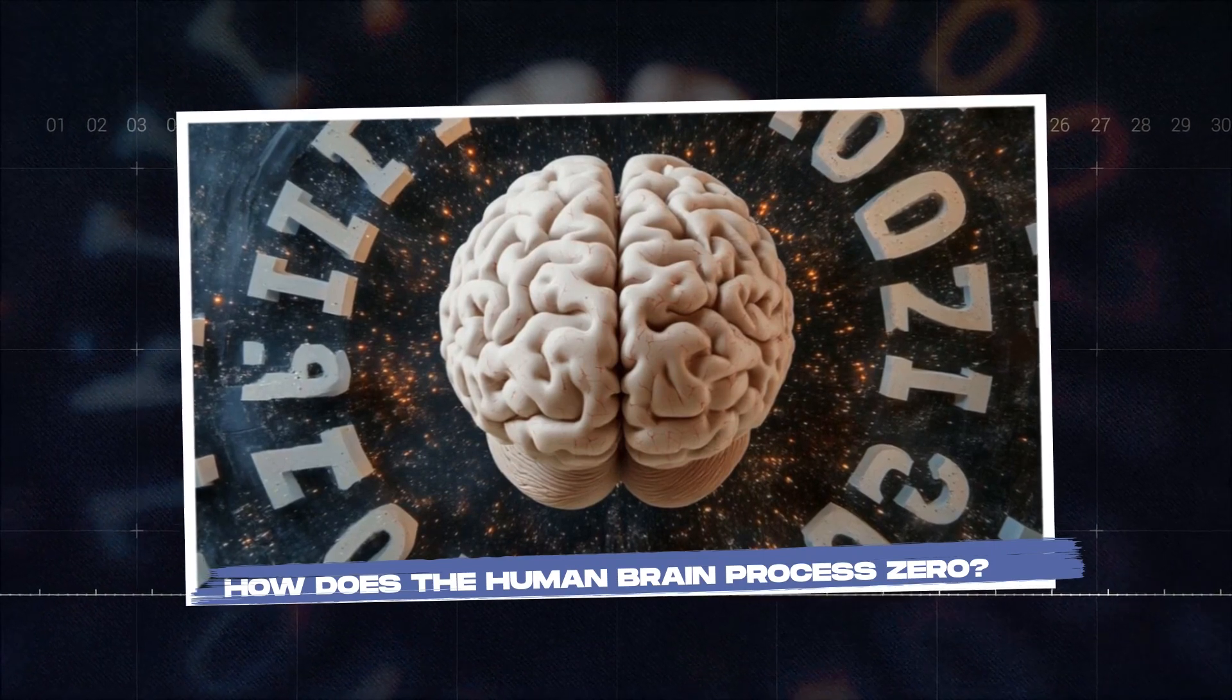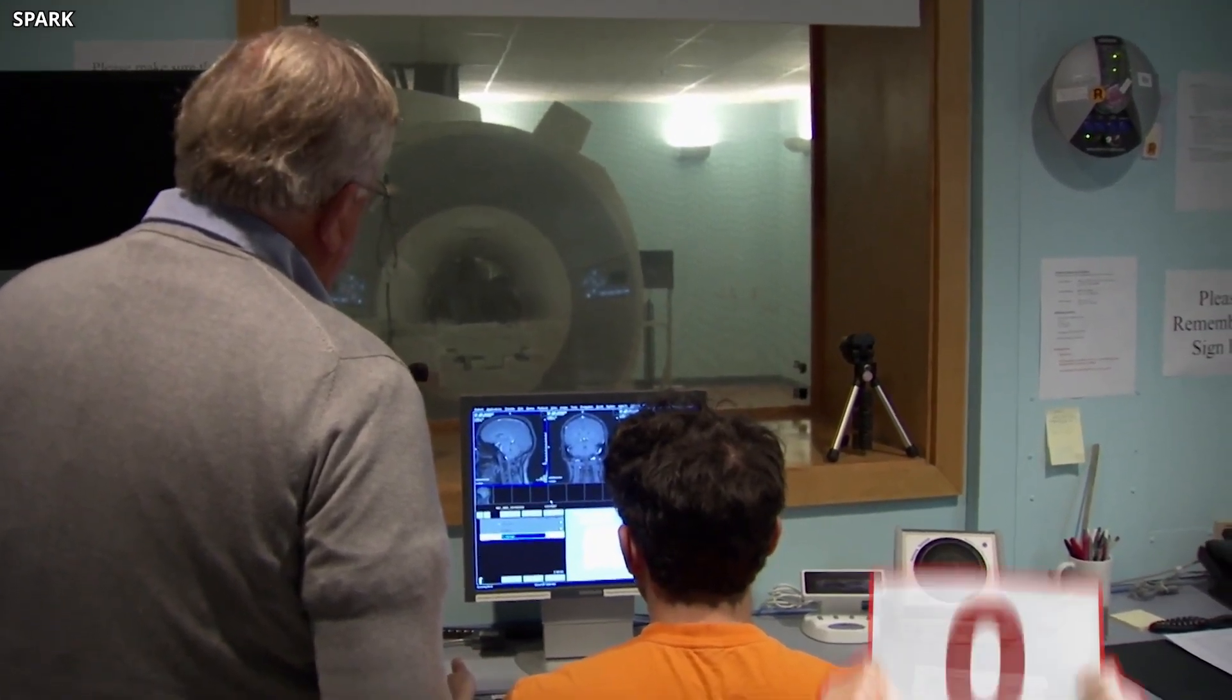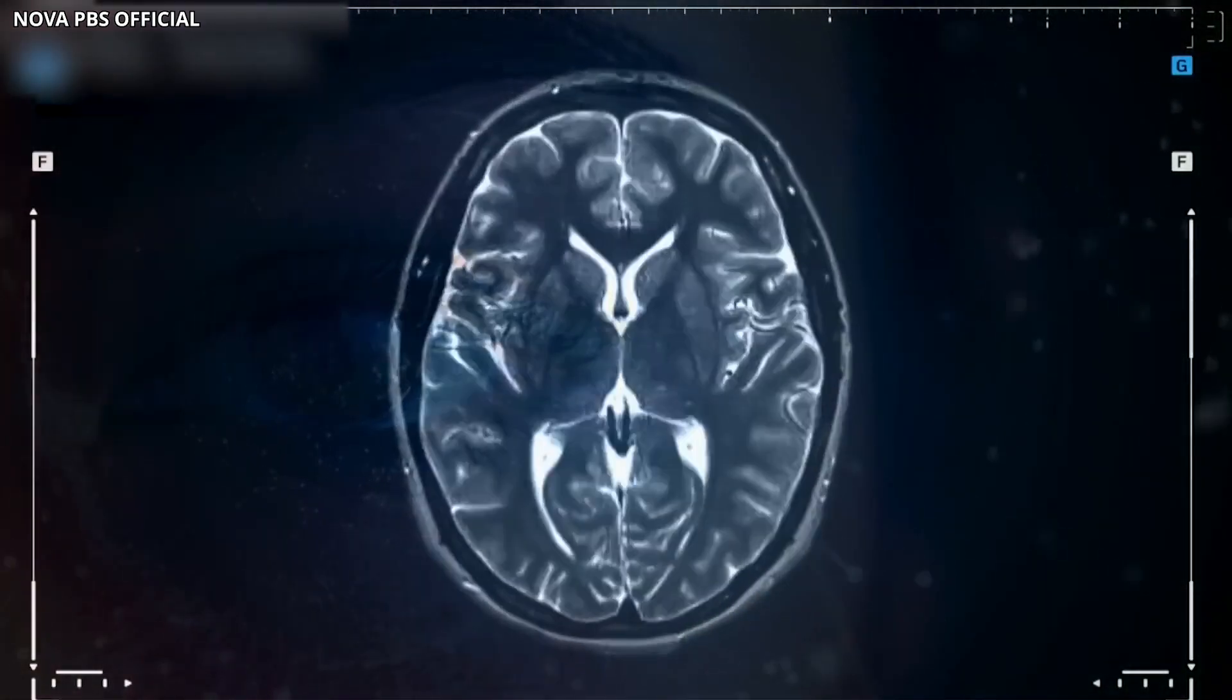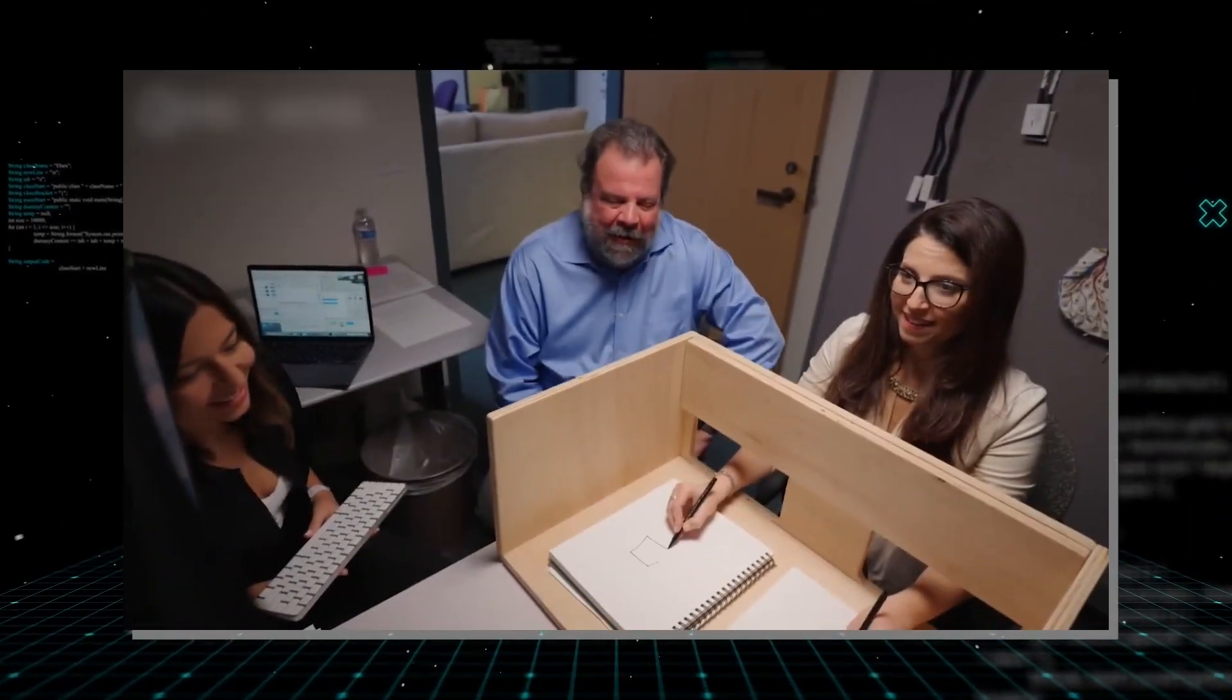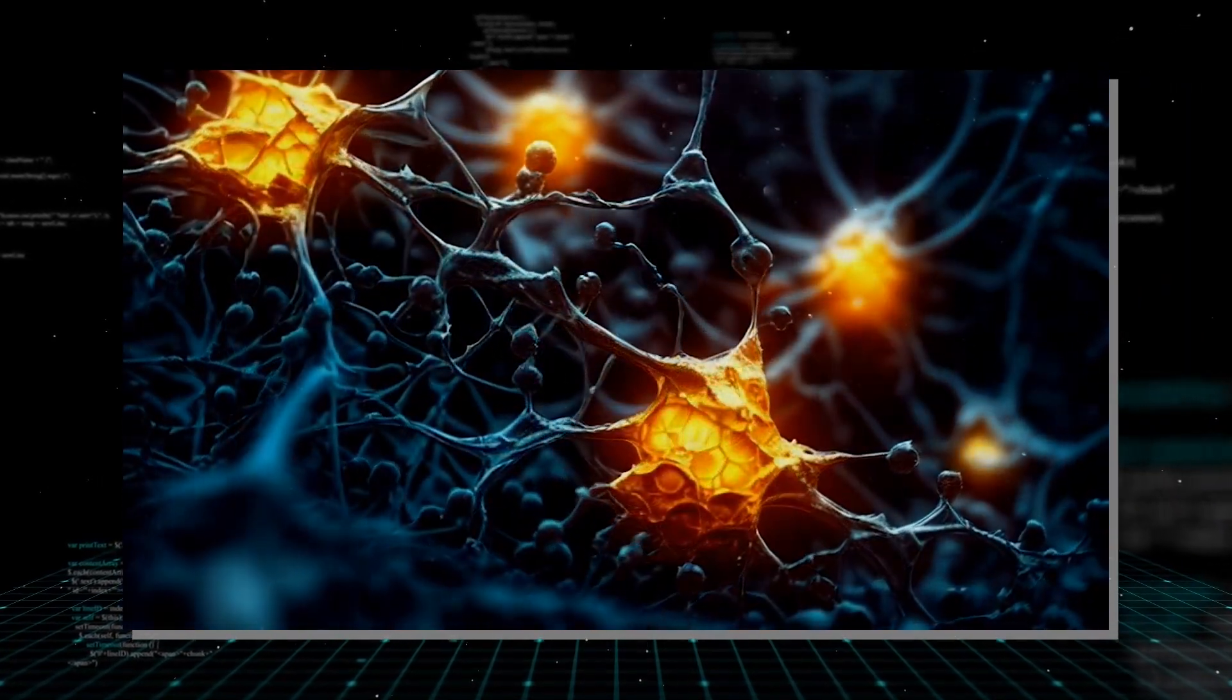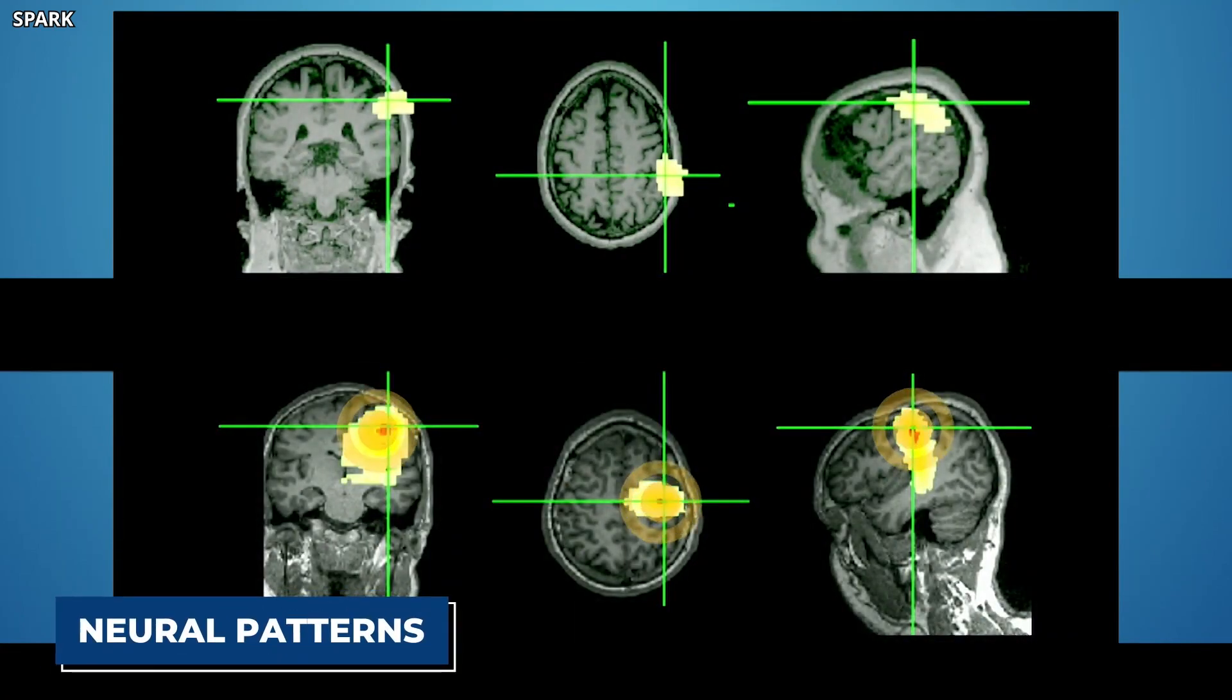So, how does the human brain process zero? Recent research sheds light on how the brain processes zero and absence, challenging previous assumptions. For decades, the focus in consciousness and perception science was on brain activity related to detecting environmental stimuli. However, this neglected the experience of absence, such as realizing your keys are missing. Initially, researchers believed absence was simply the lack of neuronal firing, but new studies, including work by Benji Barnett and Steen Fleming at University College London, demonstrate that the brain encodes absence using unique neural patterns.